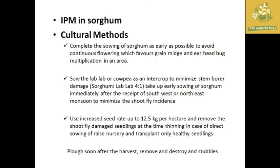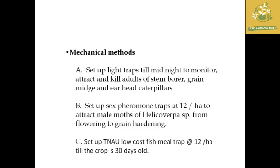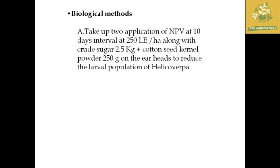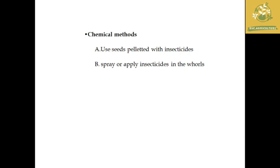For integrated pest management in sorghum: the cultural method includes plowing after harvest, removing old stubble and destroying them, intercropping sorghum with lablab at 4:1 ratio, and timely sowing. The mechanical method includes light traps, pheromone traps, and TNAU low-cost fish meal traps. The biological method includes application of NPV at 10-day intervals for control of Helicoverpa. The chemical method involves use of specific insecticides for particular insects and seed-pelleted insecticides at the seed level.